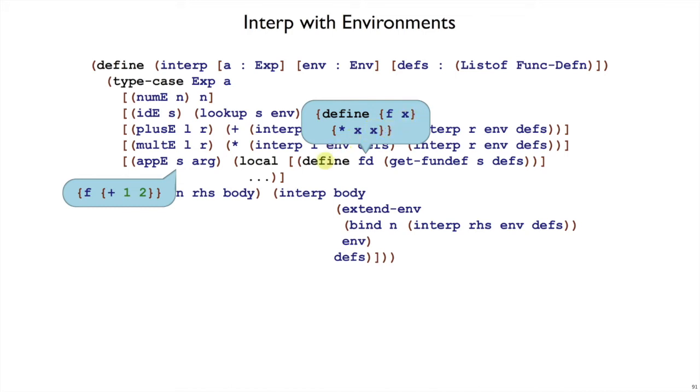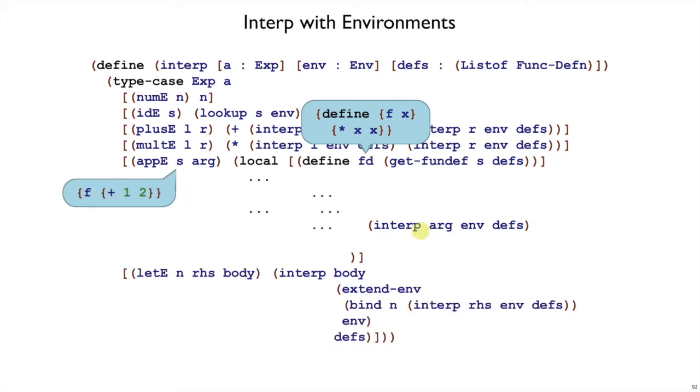So the code that we had before is still useful. We need to go find that definition. That's what getfundef does. So fd has the name f, it has the argument x, and it has the body expression times x x. What we want to do with the application is first evaluate the plus 1, 2. So that's an interp on the argument, just the natural recursion as you expect from the template.